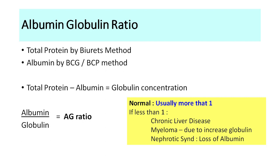We can estimate total protein using the Biuret method and albumin using BCG or BCP. Total protein minus albumin gives the globulin concentration. The ratio of total albumin to total globulin is the albumin-globulin (AG) ratio. Normally, albumins are more than globulins and the AG ratio is greater than 1 — typically around 1.2. A value less than 1 has traditionally been used to suggest chronic liver disease, but the current diagnostic criterion is a serum albumin less than 3.2 grams per deciliter.